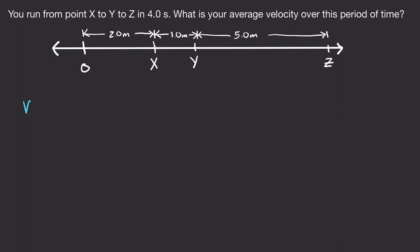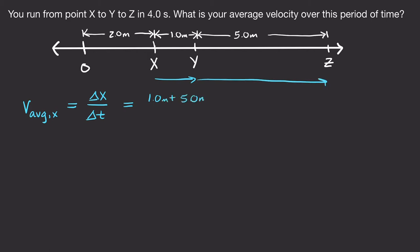We'll start by writing down the formula for average velocity moving in the x direction. This is just our displacement in x, delta x, over our change in time. Our total change in x: if we go from x to y, we have one meter in the positive x direction, then we go another five meters, so one plus five. That took us a total of four seconds, giving us six meters in four seconds — that's one and a half meters per second.